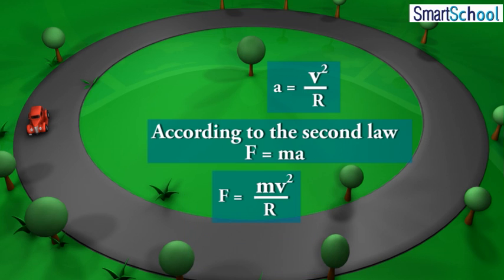MV square upon R, where M is the mass of the body. This force directed towards the center is called the centripetal force.